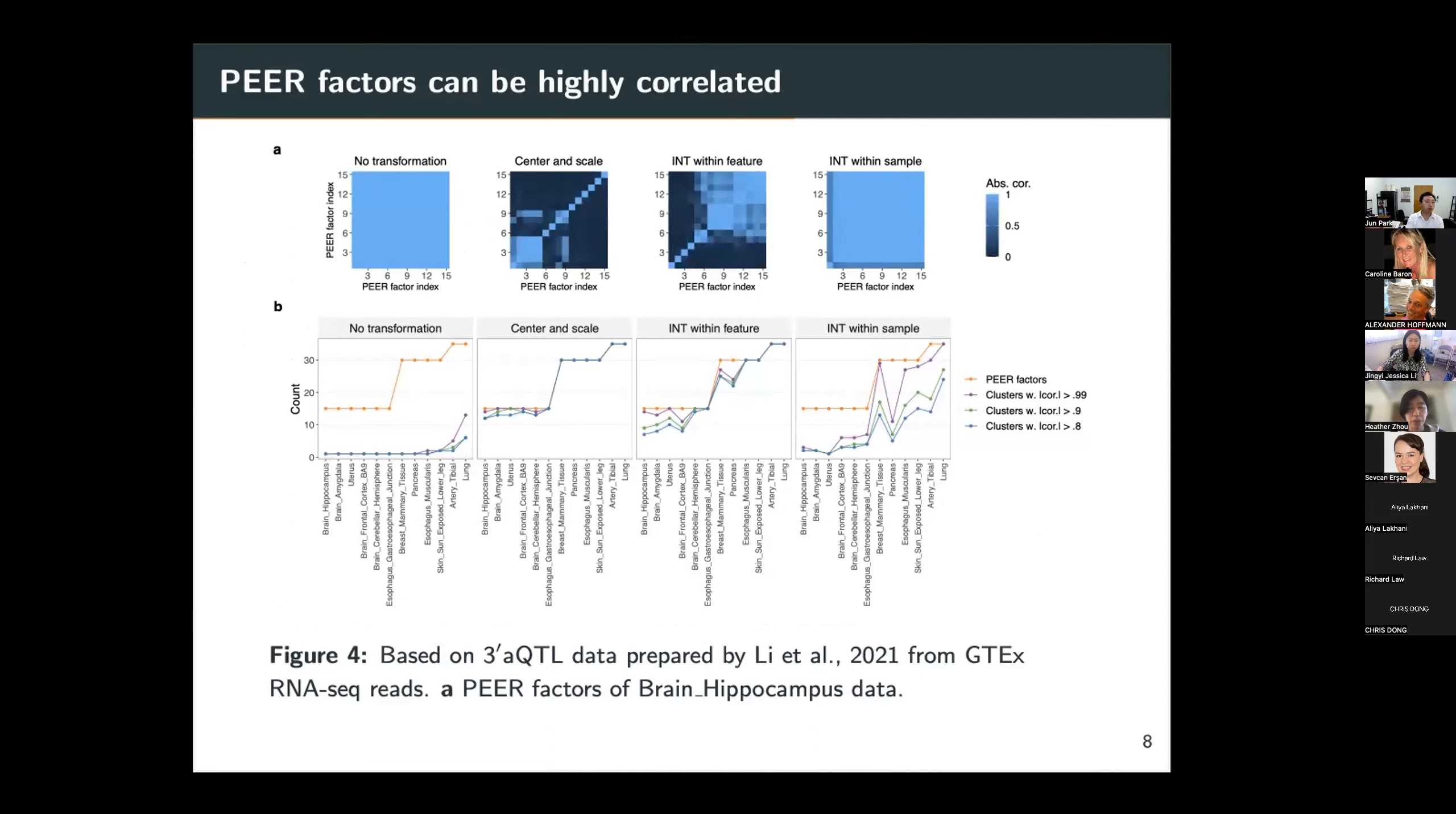So in addition, we found some other evidence that PEER factors can be tricky to use. So one example was that we found in the 3'APQTL data prepared by Lee et al 2021 from GTEx RNA-seq reads that the PEER factors can be highly correlated if the phenotype data is not transformed in specific ways. So these four heat maps show the PEER factors. They're the correlation heat maps of PEER factors calculated from the tissue type brain hippocampus.